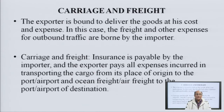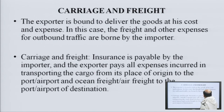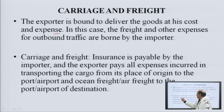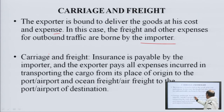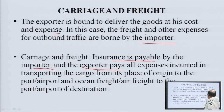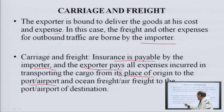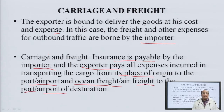Carriage and freight (C&F): The exporter is bound to deliver the goods at his own cost and expense. In this case, freight and other expenses for outbound traffic are borne by the importer. The carriage and freight insurance is payable by the importer, and the exporter pays all expenses incurred in transporting the cargo from its place of origin to the port or airport, plus the ocean or air freight to the port or airport of destination.